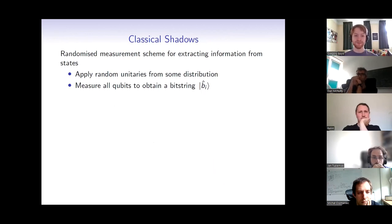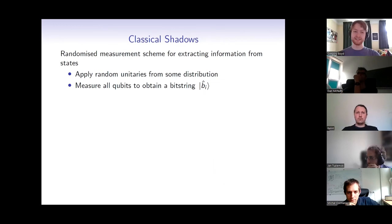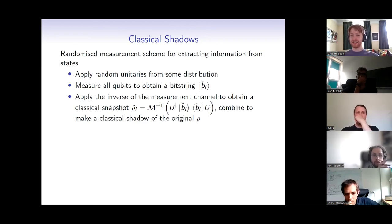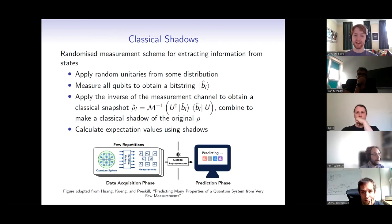Classical shadows is a randomized measurement scheme for efficiently extracting information from quantum states. The scheme applies random unitaries from some distribution that we can classically efficiently simulate, and we measure all qubits to obtain a bit string. We then apply the inverse of this measurement channel classically to obtain a classical snapshot of our quantum state, and combine these to make a representation of our original state. We can then calculate expectation values using these classical shadows, and this has the advantage that we can calculate a large number of expectation values using only a logarithmic number of shots.